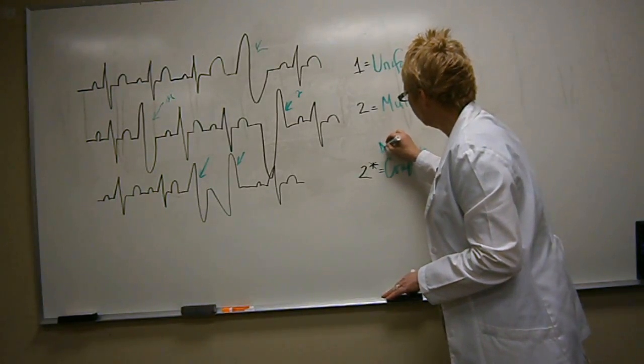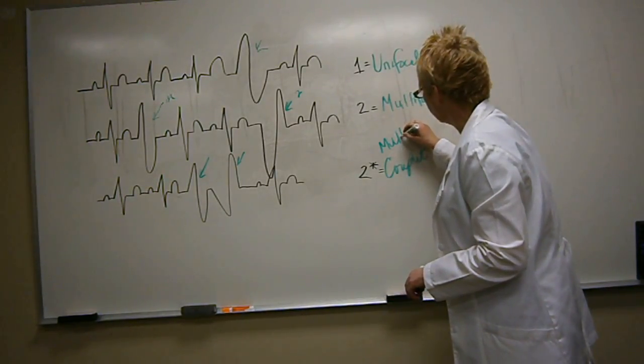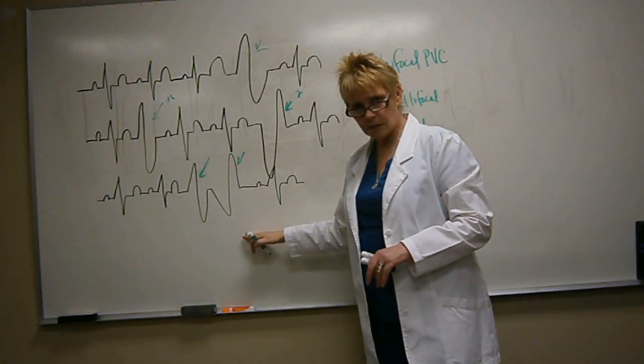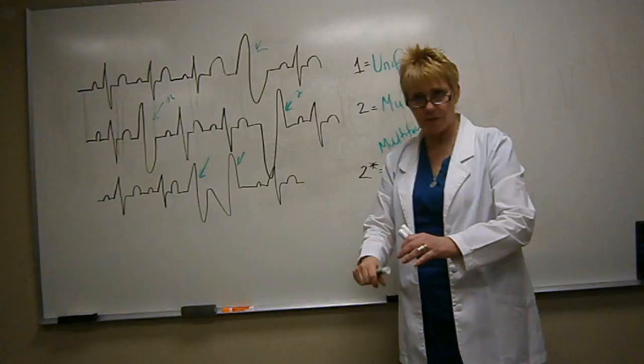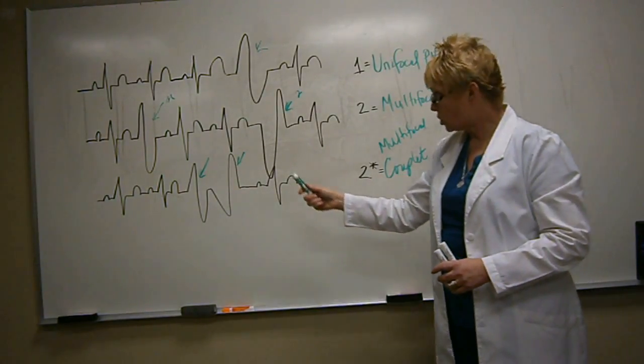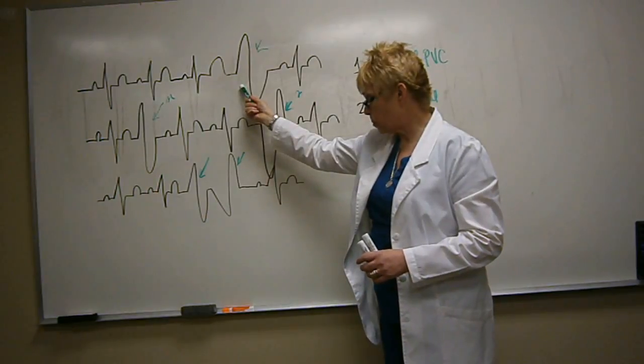This is what's called a couplet. When you have PVCs side by side, and when you have a multifocal couplet, that means from two different sites of irritation side by side. I describe they're a couple, they're holding hands, or they can be called a pair. This is one type of PVC.